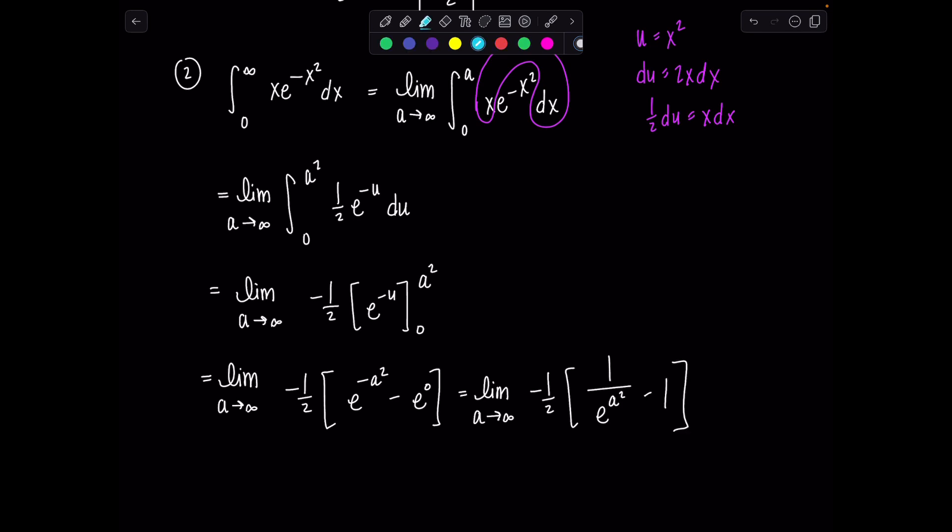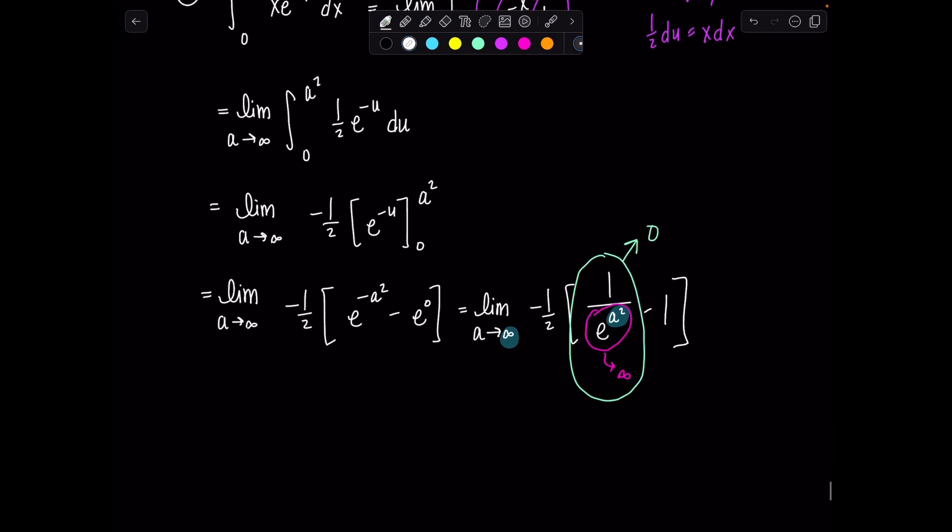Very good. And then, same reasoning as before. So, A is going to infinity. That means A squared is going to infinity. In fact, this whole denominator is going to positive infinity. A constant over something getting big goes to zero. Yay. So, now we have negative one-half times zero minus one, which is positive one-half.